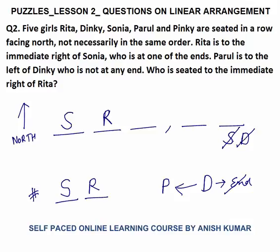The position left for Dinky is the fourth place. Parul is to the left of Dinky, so the only position to Dinky's left is the third place — that will be Parul's position. The last remaining place goes to Pinky. The question asks: who is seated to the immediate right of Rita? The answer is Parul.